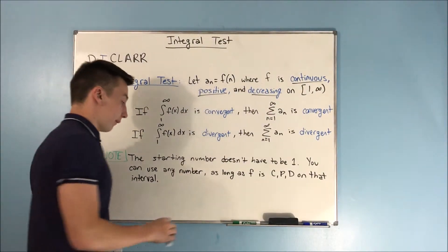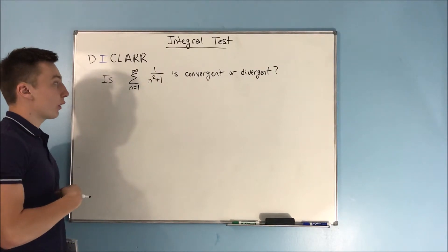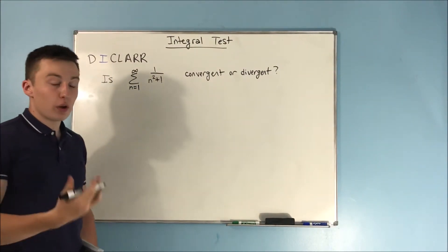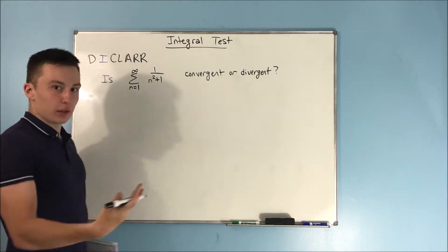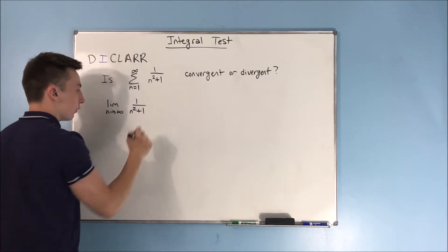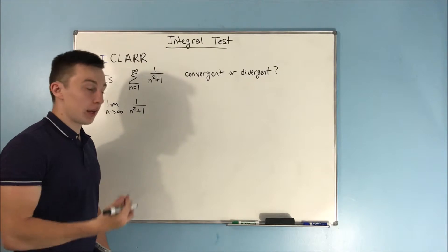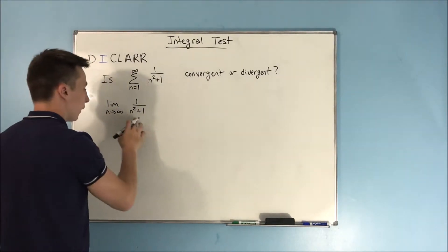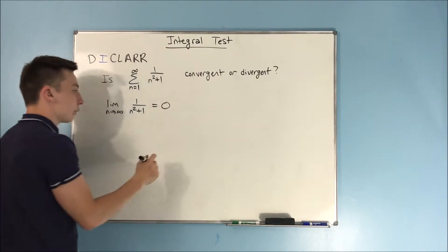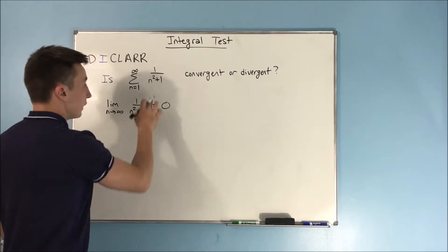Now we'll do a quick example. The question is: is the sum from n=1 to infinity of 1/(n²+1) convergent or divergent? We should probably start off with the test for divergence, since that would be easier than the integral test. So we take the limit as n approaches infinity of 1/(n²+1). As n approaches infinity, the denominator becomes infinitely large, making the whole fraction go to zero. This equals zero, which means we need to move on to another test — that being the integral test.